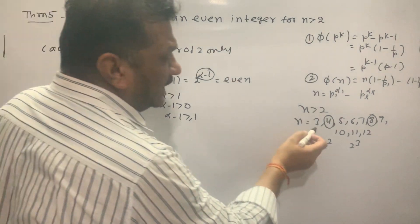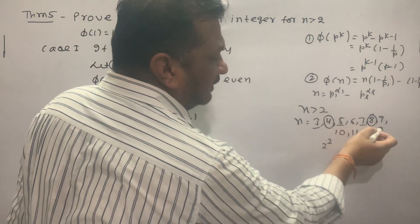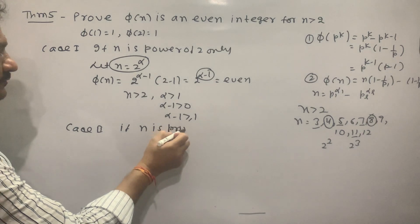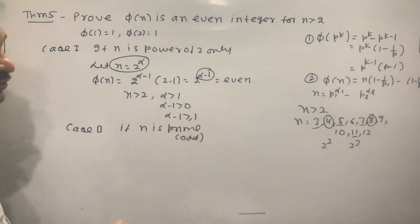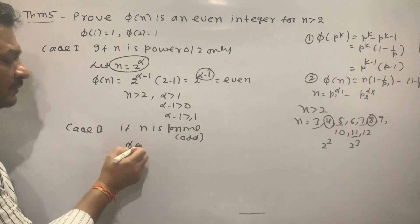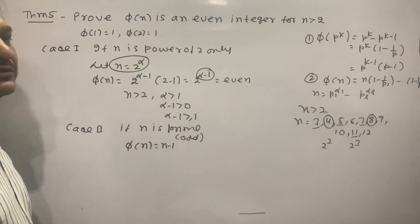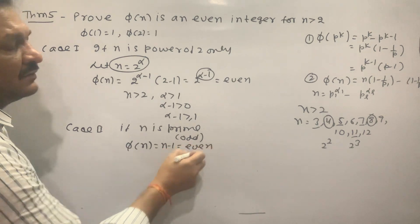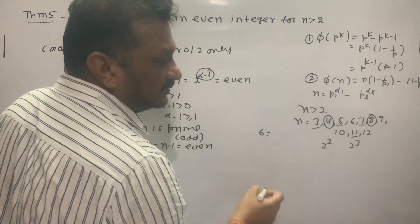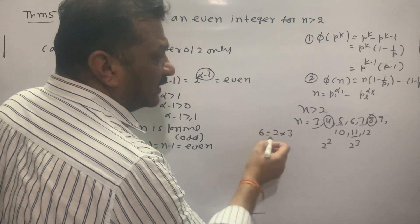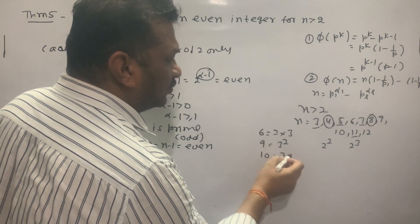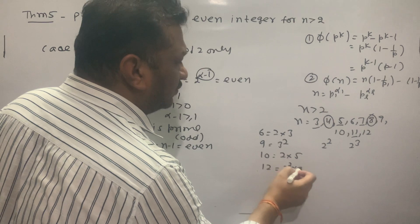Next, consider prime numbers 2, 3, 5, 7, 11... If n is a composite number, like 6 = 2×3, or 9 = 3^2, or 10 = 2×5, or 12 = 2^2 × 3, what does phi do here?